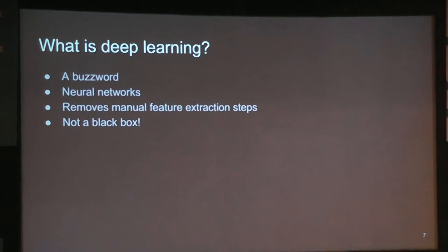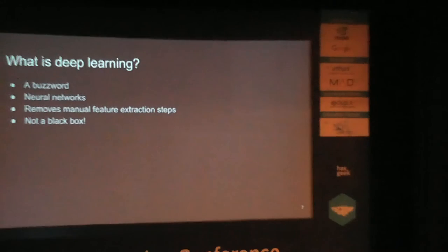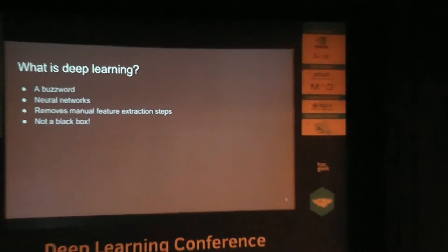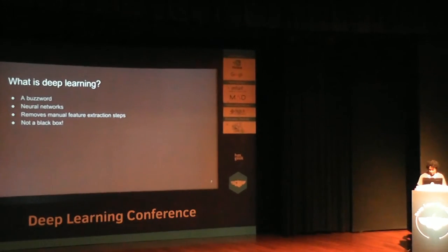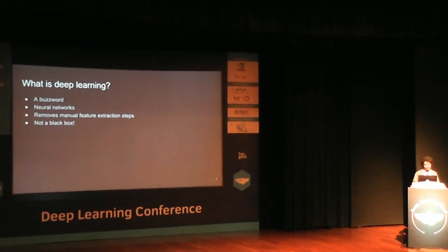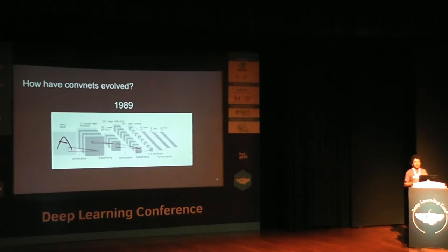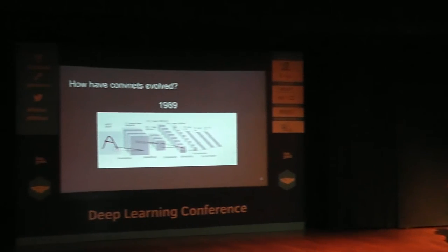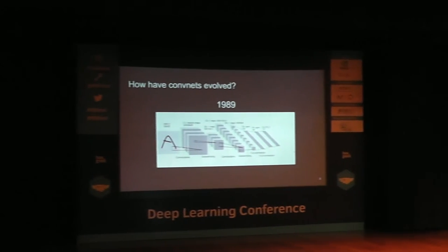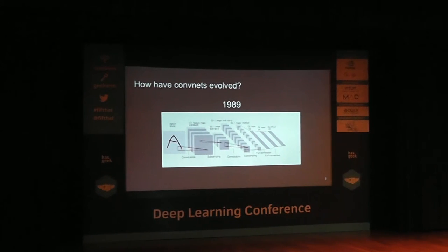Many people think deep learning is a black box and say they won't use neural networks. But it's not a black box — we will see. History is always good. We must learn how deep learning machines have evolved, just as continents have evolved.